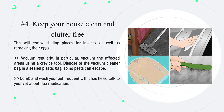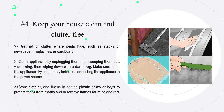Number four: keep your house clean and clutter-free. This will remove hiding places for insects as well as removing their eggs. Vacuum regularly — in particular, vacuum the affected areas using a crevice tool. Dispose of the vacuum cleaner bag in a sealed plastic bag so no pests can escape. Comb and wash your pet frequently if it has fleas, and talk to your vet about flea medication. Get rid of clutter where pests hide, such as stacks of newspaper, magazines, or cardboard.